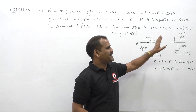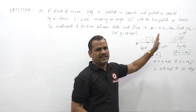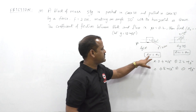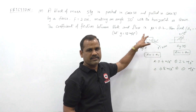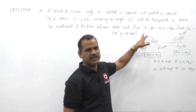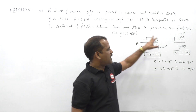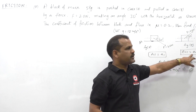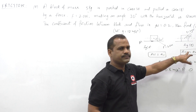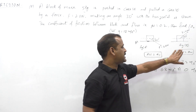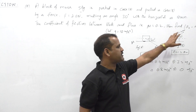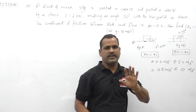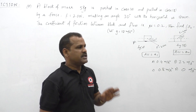That is the difference of accelerations — if A1 is the acceleration in case A (pushing case) and A2 is the acceleration in case B (pulling case), we need to find A2 minus A1.